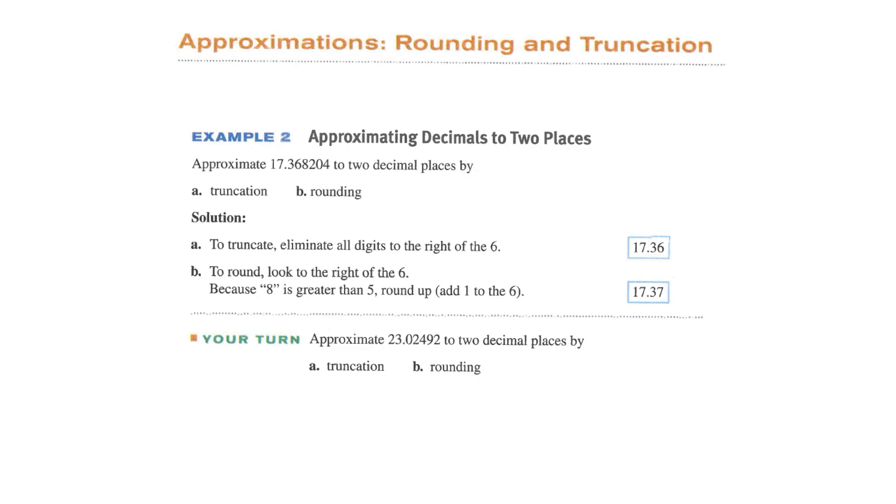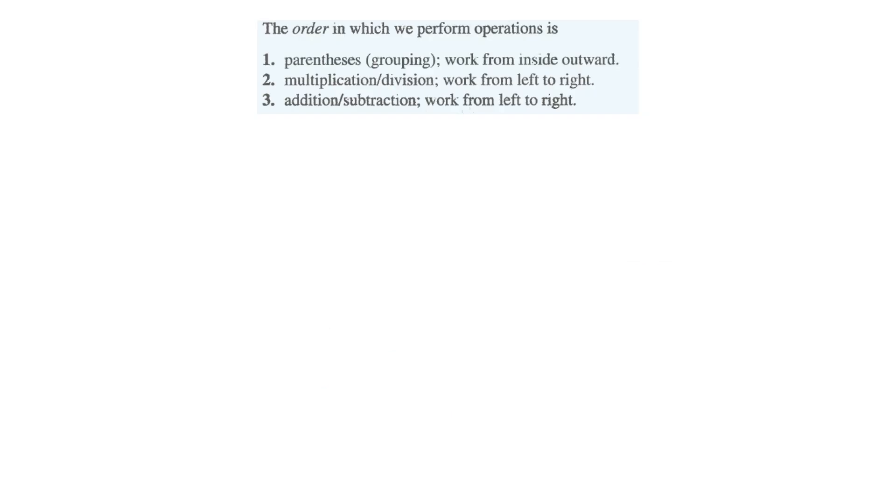Let's talk about rounding and truncating. So approximate 23.02492 to two decimal places by truncating first and then by rounding. If you truncate it, it's 23.02 and then rounding it's 23.02. It's going to round to the exact same thing. A better example I think is this one here, 17.368. If you truncate, you just cut it off. Truncated would be 17.36. If you round, it would round up to 17.37.